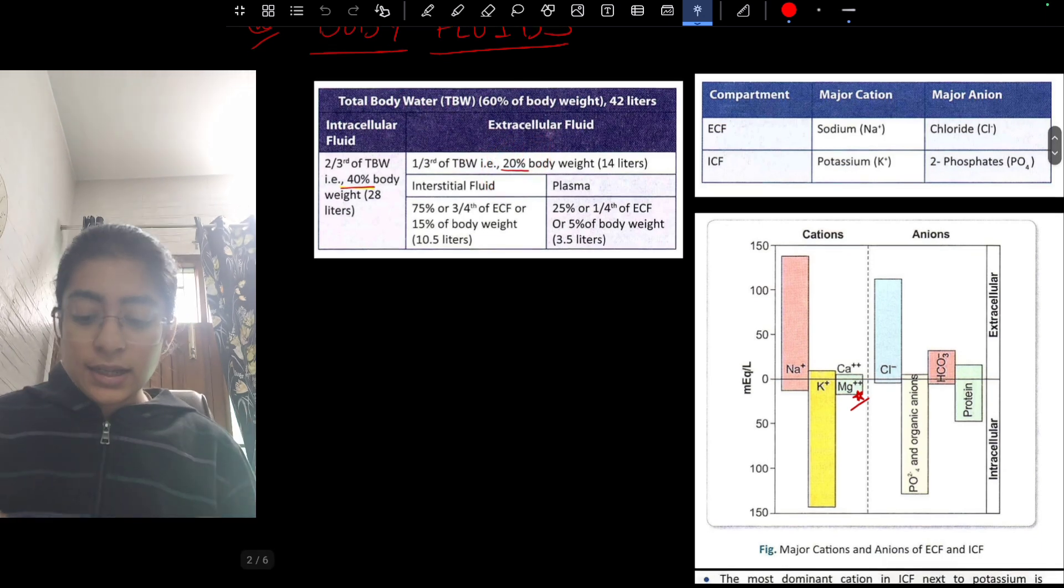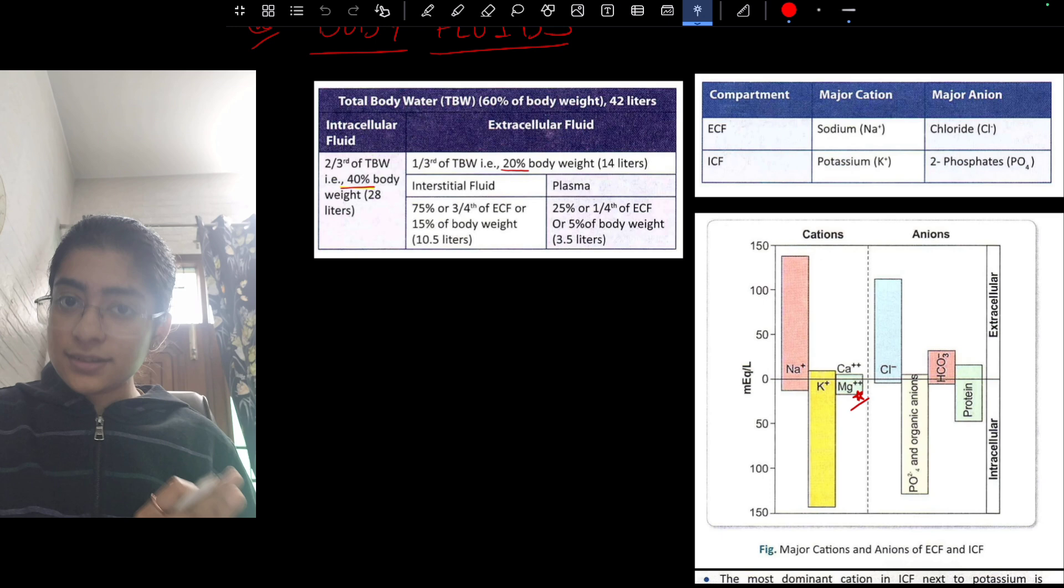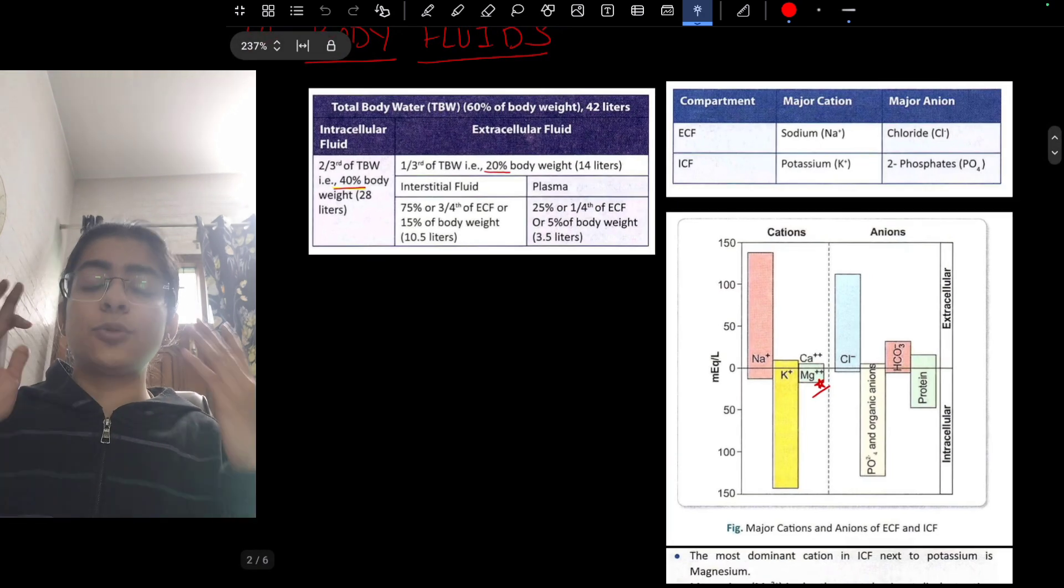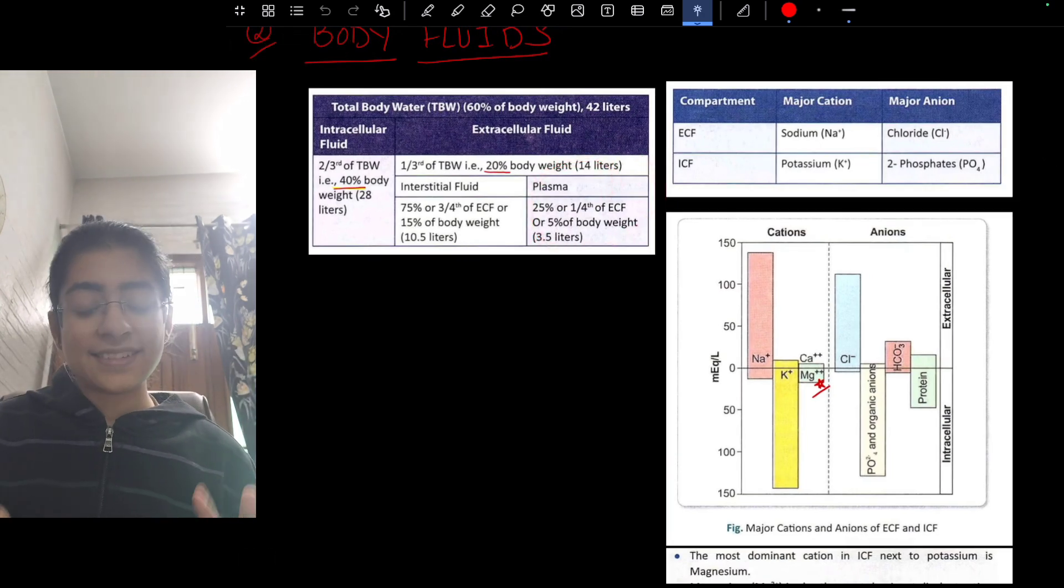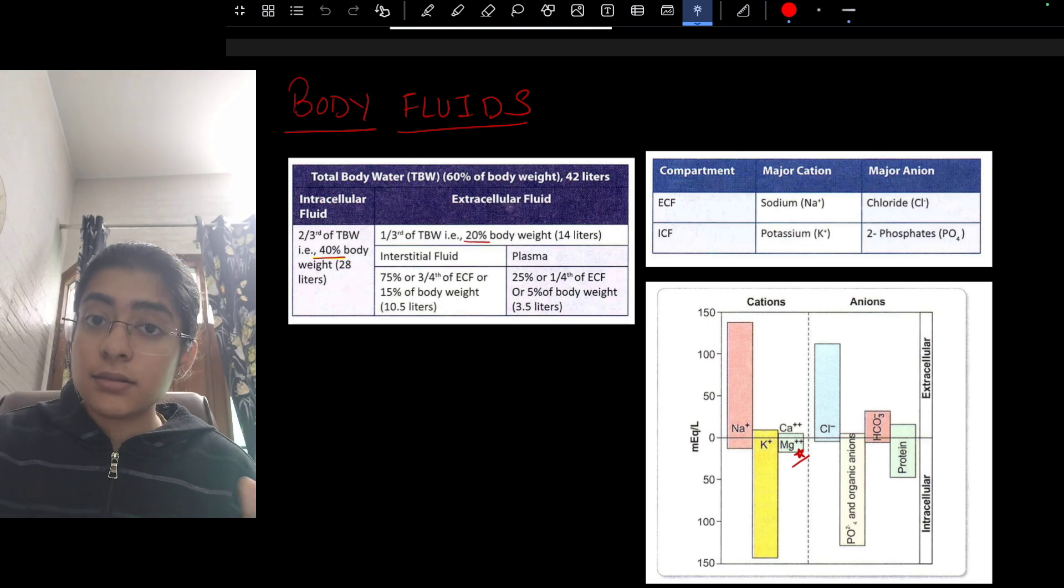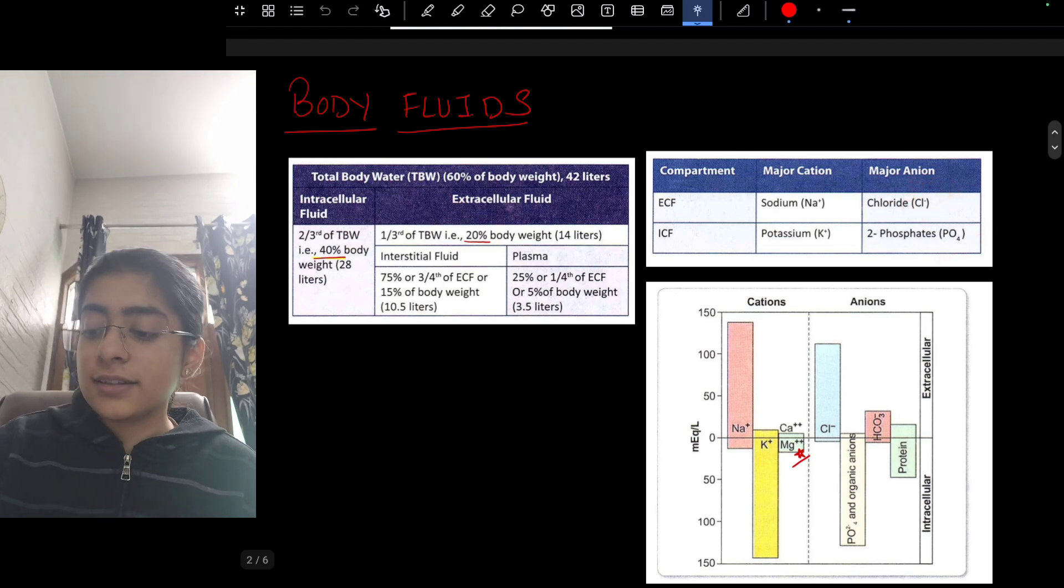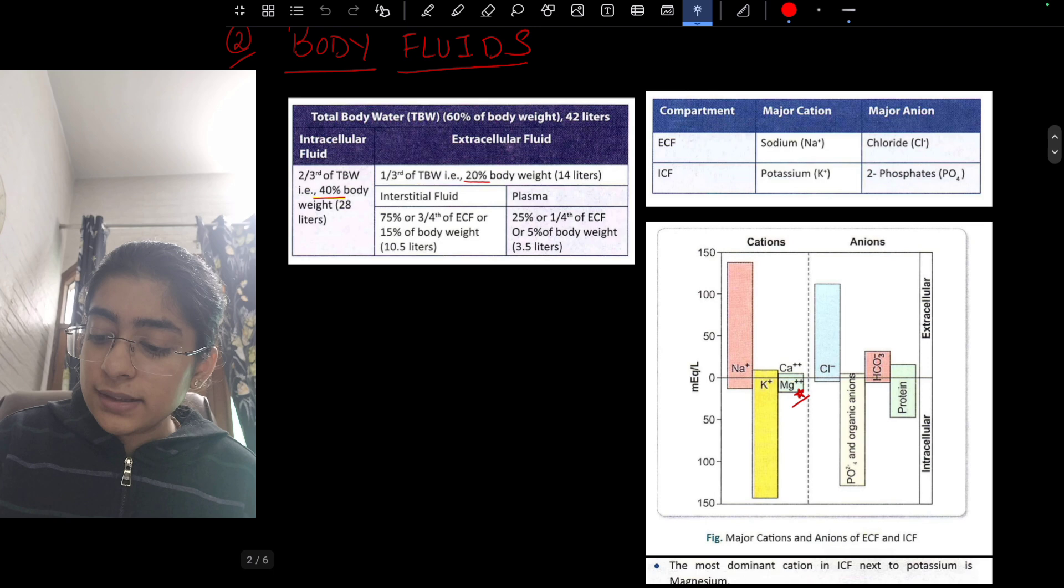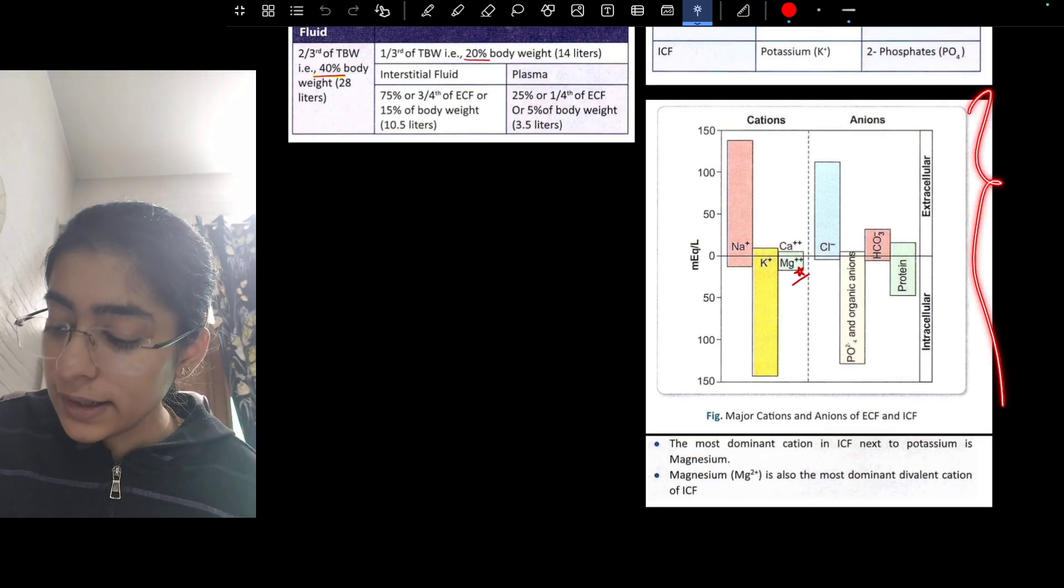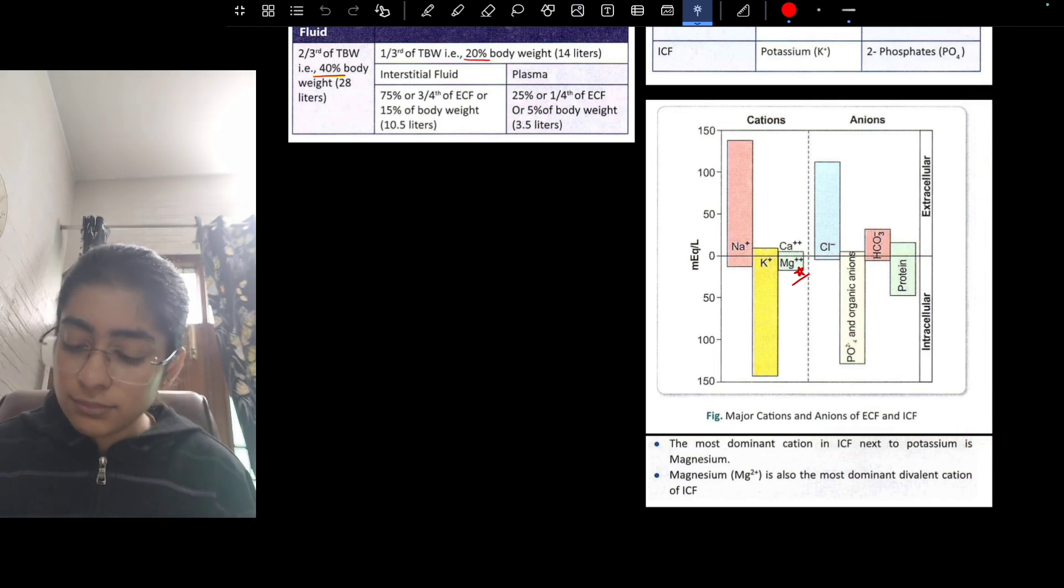Interstitial fluid and plasma: interstitial fluid is 3/4 of the extracellular fluid and plasma is only 1/4. We think we have so much blood but it is lying at the lowest classification. Major cation is sodium and the major cation inside the cell is potassium. Major anion outside is chloride and inside is phosphate. We can learn by the mnemonic that sodium chloride is outside, the salt is outside, and potassium phosphate is inside. To learn the levels you can learn this diagram which will help you.